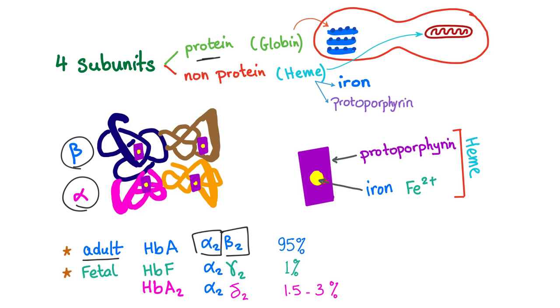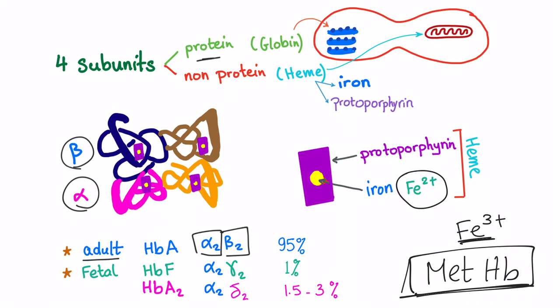The heme has iron and protoporphyrin. So here's heme group, protoporphyrin and iron. The iron is in the ferrous state. Fe2+ binds O2. How about the ferric? No, the ferric is called methemoglobin. If you have ferric, the hemoglobin is called methemoglobin, and it's not normal. Methemoglobin cannot carry oxygen because Fe3+ cannot carry oxygen. Only Fe2+ carries O2.